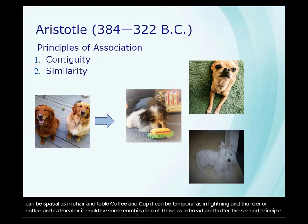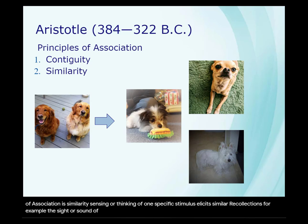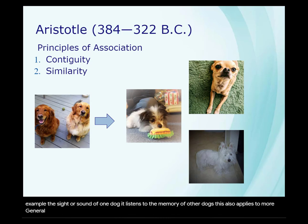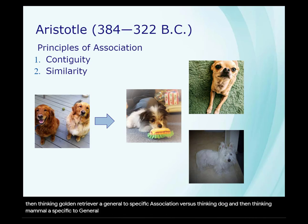The second principle of association is similarity. Sensing or thinking of one specific stimulus elicits similar recollections. For example, the sight or sound of one dog elicits the memory of other dogs. This also applies to more general or more specific associations. Cognitive scientists make a distinction between thinking 'dog' and then thinking 'golden retriever' — a general to specific association — versus thinking 'dog' and then thinking 'mammal' — a specific to general association. But Aristotle didn't make that distinction.